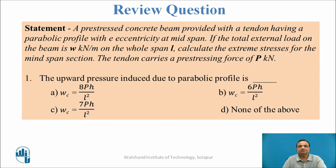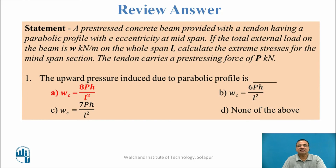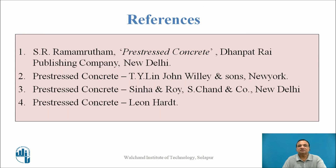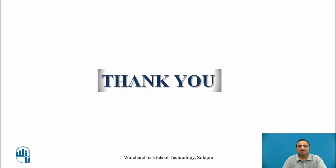Review question: For a concrete beam with a parabolic tendon having W kN/m on whole span L and pre-stressing force P, what is the net upward pressure developed? The answer is 8pH / L². Thank you one and all.